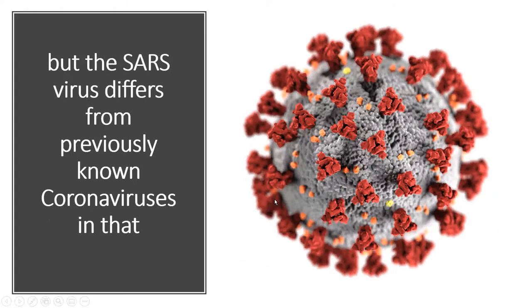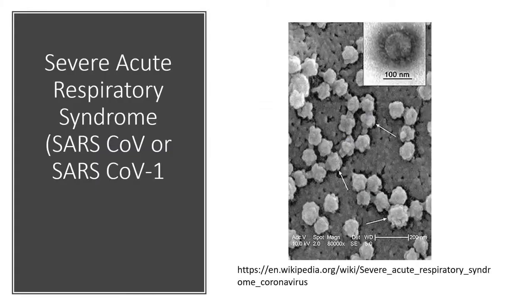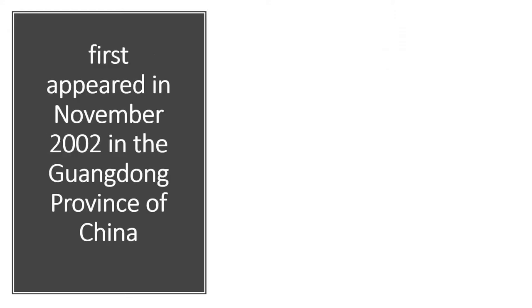But the SARS virus differs from previously known coronaviruses in that it infects the lower respiratory tract and spreads throughout the body. For the non-medical, the lower respiratory tract means mainly the lungs — trachea, bronchi, and the lungs. SARS-CoV, or SARS-CoV-1, first appeared in November 2002 in the Guangdong province of China.